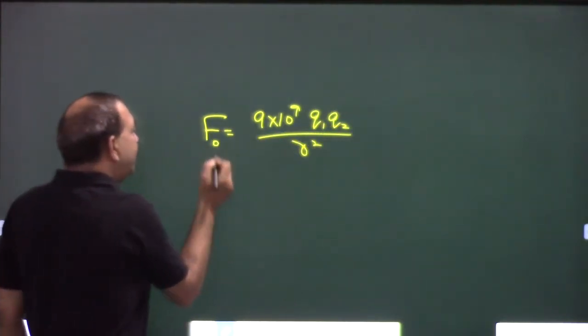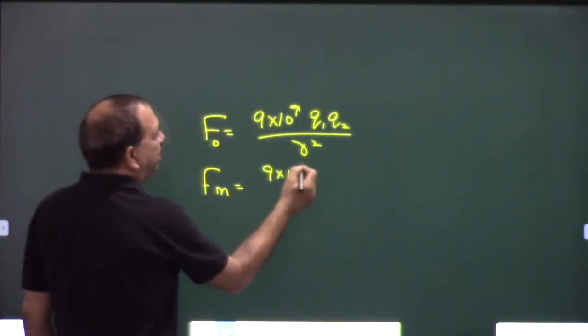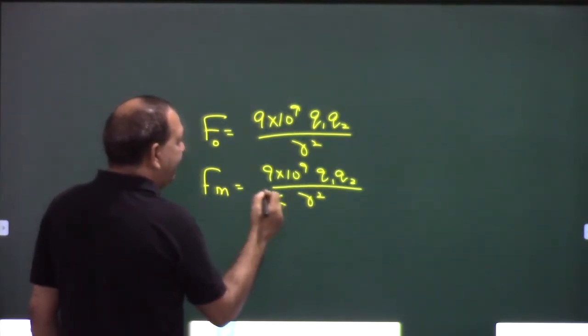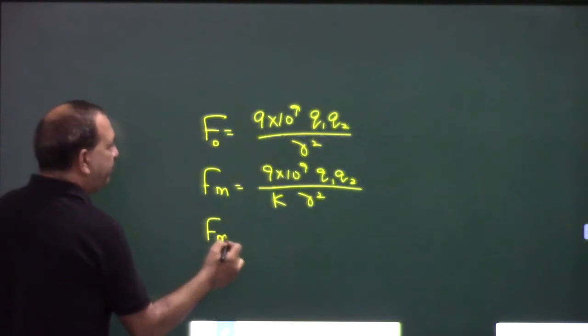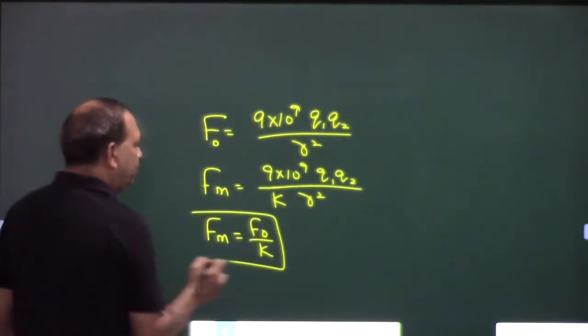And in medium this becomes 9 into 10 to the power 9 q1 q2 upon r square divided by k. So in medium the force is 1 by k times of vacuum. Ye toh aap logo ko pata hai.